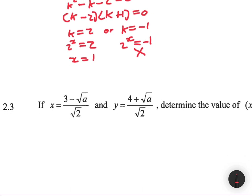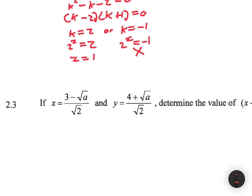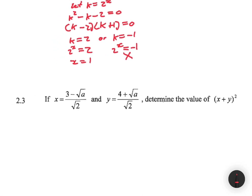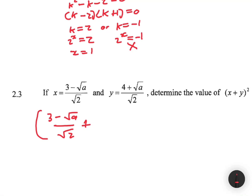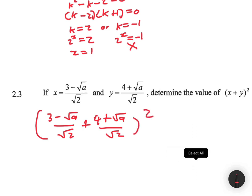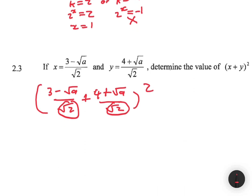The next problem: if x equals 3 minus square root of a, divided by square root of 2, and y equals 4 plus square root of a, divided by square root of 2, find the value of x plus y squared. Both x and y have square root of 2 as their denominator, so we can keep one denominator and add the numerators.